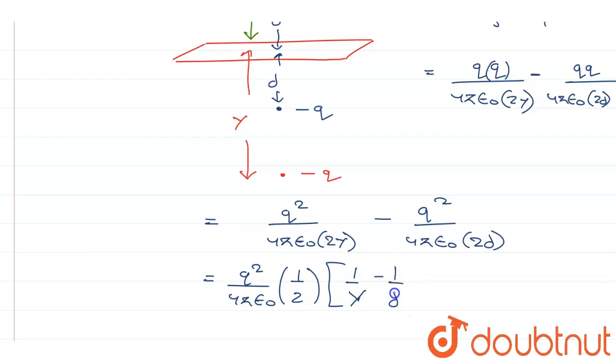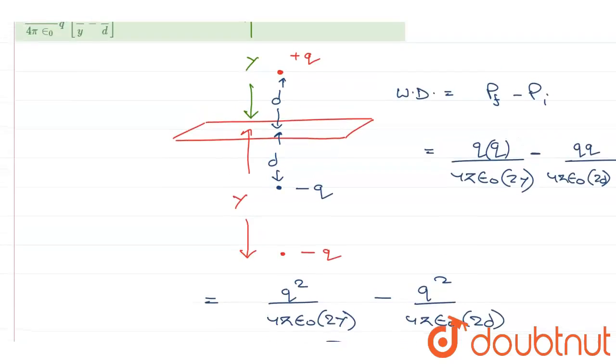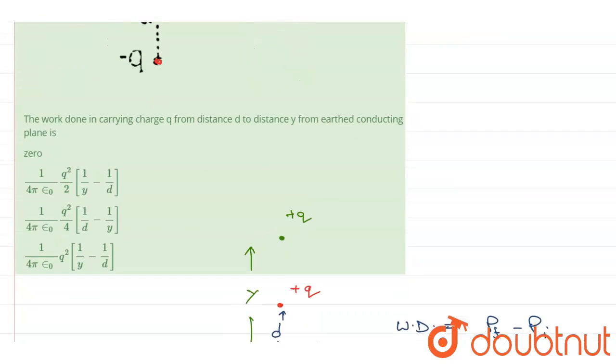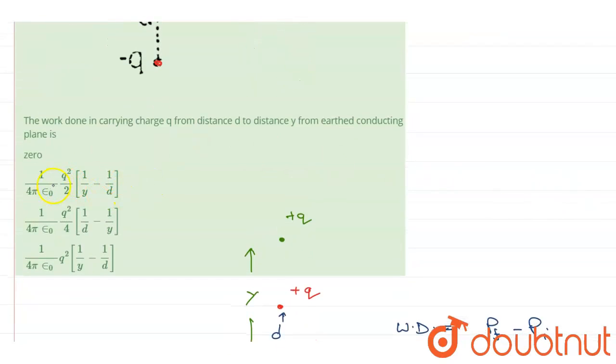1 by y minus 1 by d. So the work done in moving the charge from a distance d to y will be q squared by 4π epsilon naught, 1 by 2, into 1 by y minus 1 by d. That is option number B.